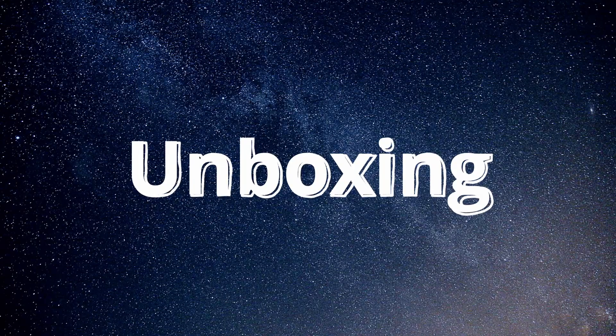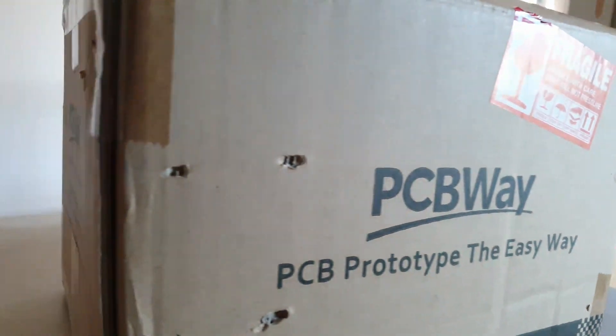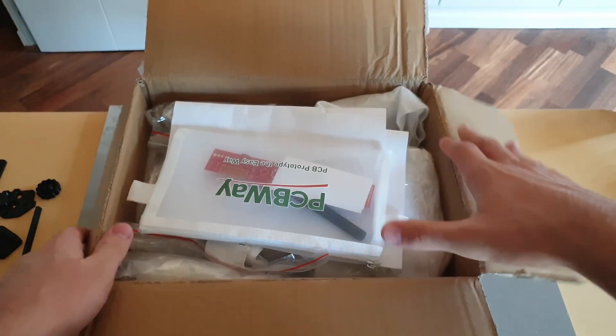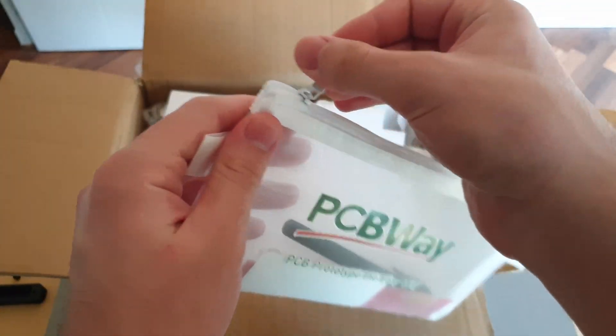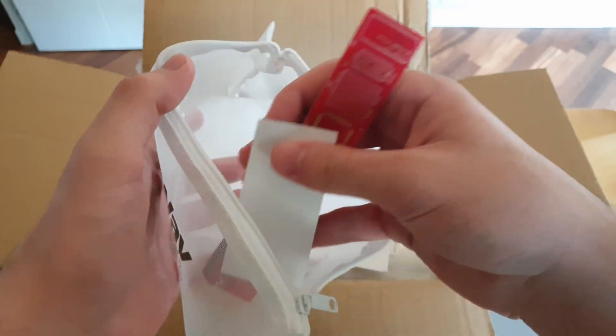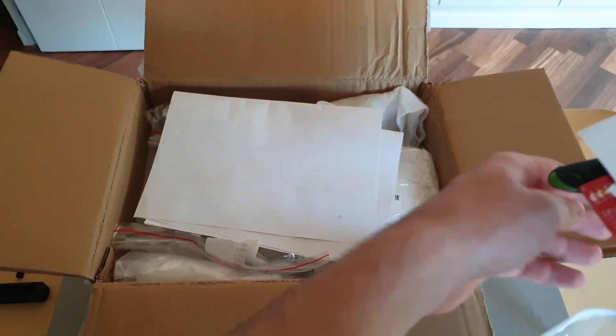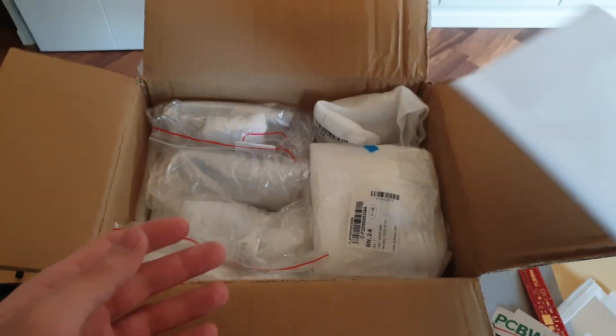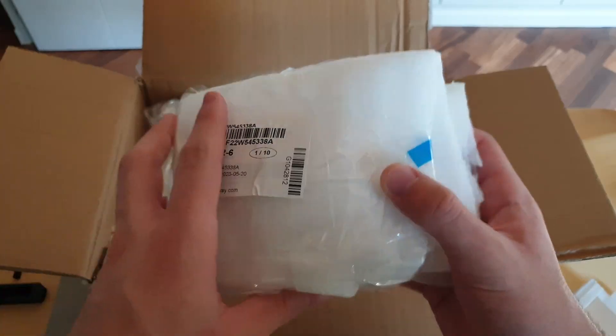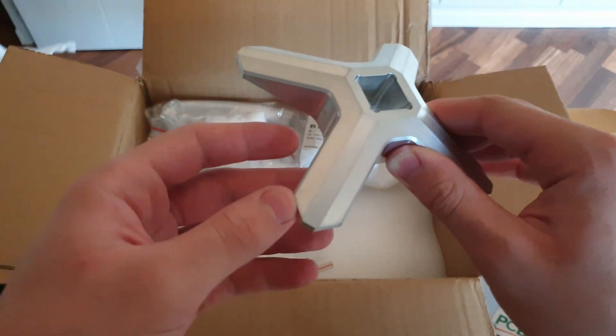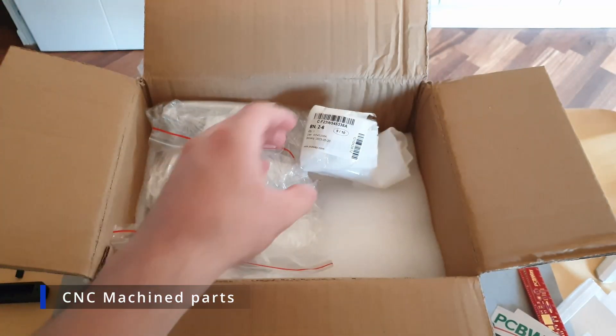But now let's get to the unboxing of the parts from PCBway. In the package they include a pen, a ruler, and some stickers which are always nice to have, and then also this sample of a SLA print. But then we get to the good stuff. This is the CNC machined base out of aluminum which is also already polished, and then the carriage which I have to say looks absolutely stunning.